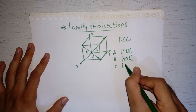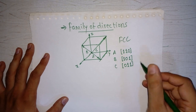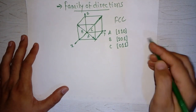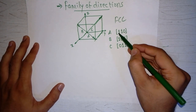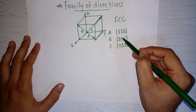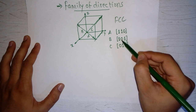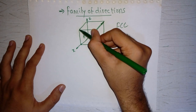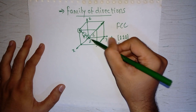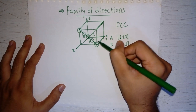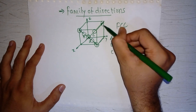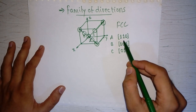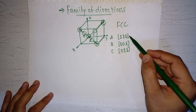If we look at these designations, the similarity is that all three directions have two 1s and one 0. Also, since it is FCC, the atomic arrangement along these directions is the same — there will be 3 atoms touching each other along each direction. So both in designation and in atomic arrangement, we can find similarity among these three directions.